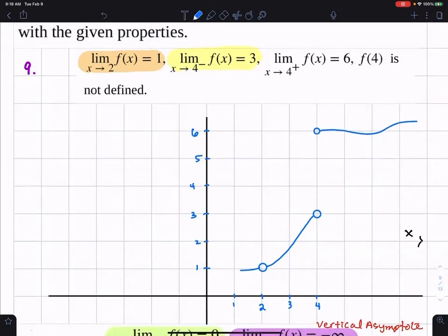So I'll just put whatever squiggle there. F of 4 is not defined. It doesn't tell us what's happening at 2 either, but f of 4 is not defined. You can make whatever you want at 2. So put a dot if you want there. Make f of 2 equal to 2.